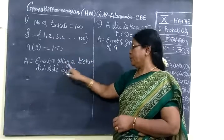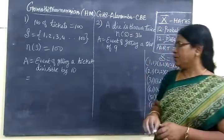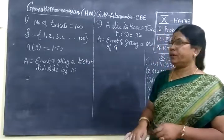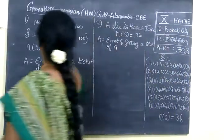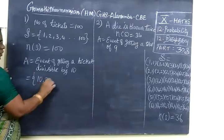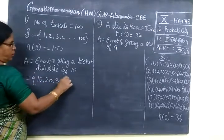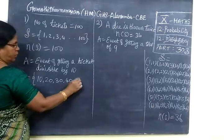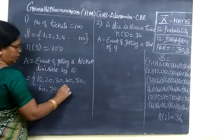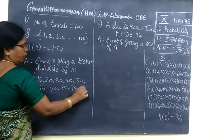From that we are selecting event of getting a ticket which are divisible by 10. So totally 100 tickets, this is divisible by 10 number we are selecting. So you can select 10, 20, so all multiples of 10. So 50, 70, 80, 90, 100.